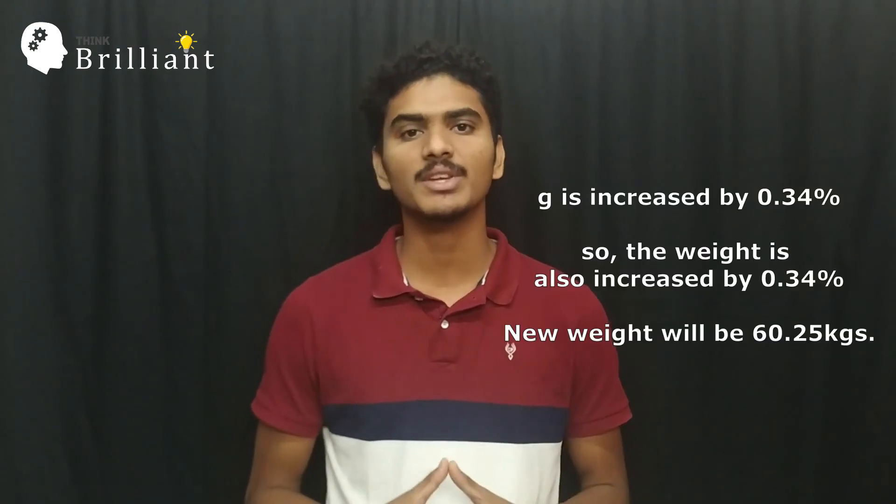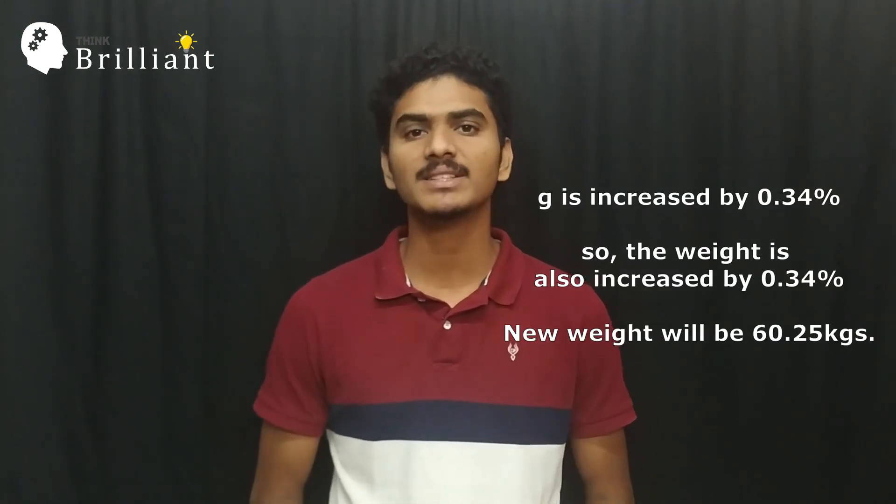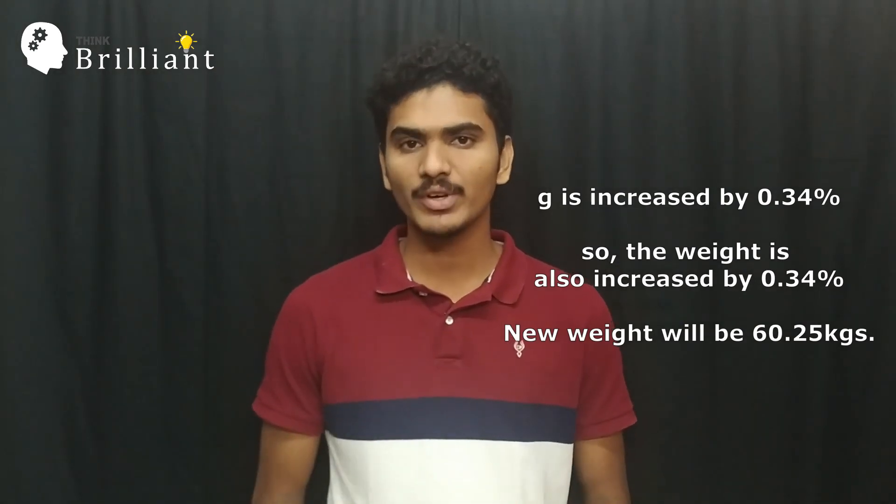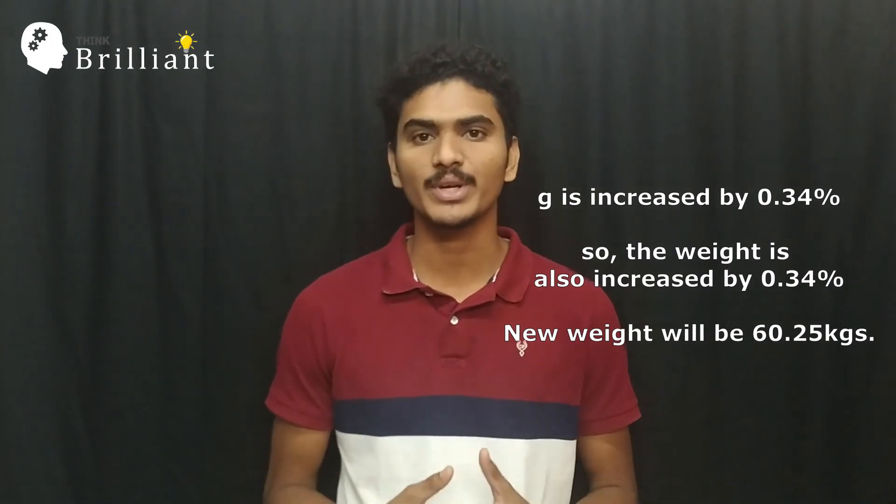So, there is no change in weight at poles, but at equator, the weight is increased by 0.34%. Thus, if a person's weight is 60 kg, then his weight at equator would be 60.25 kg if the Earth stops rotating. Now, let's get into the journey of rainbow.